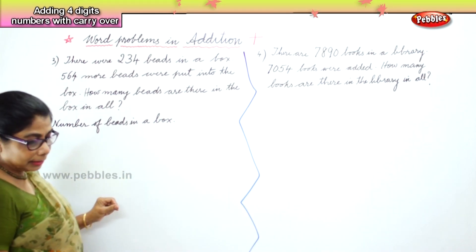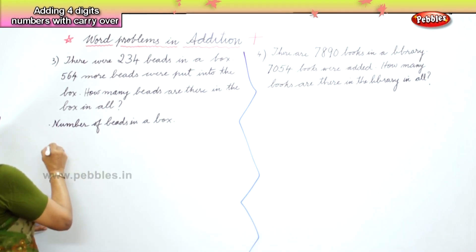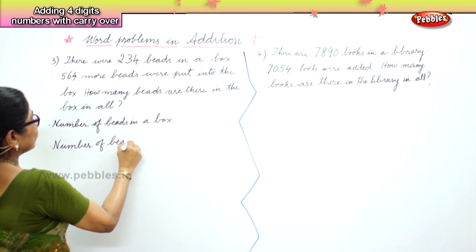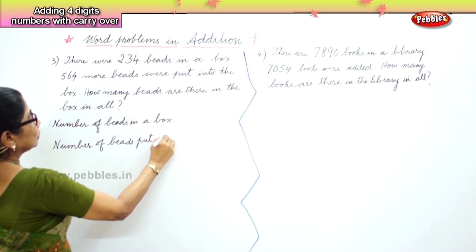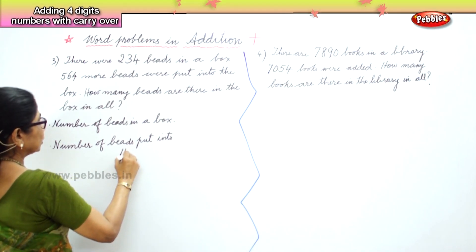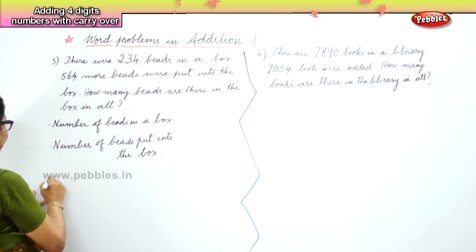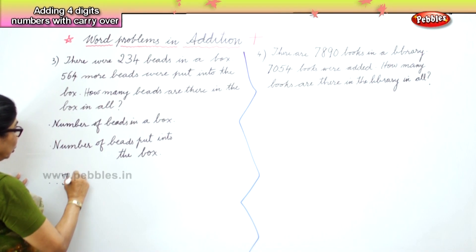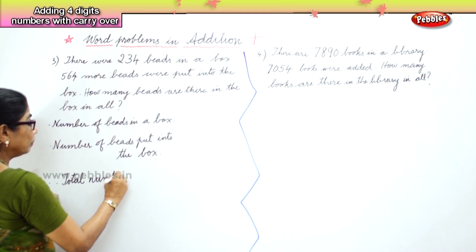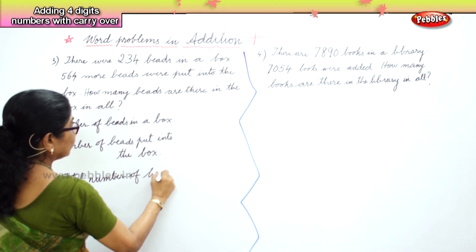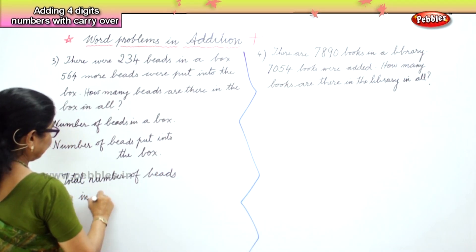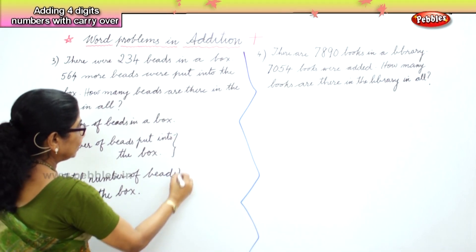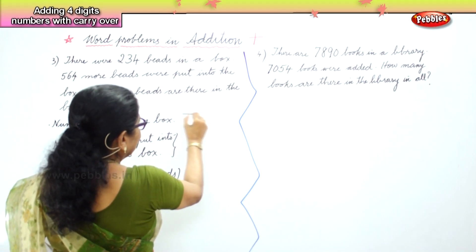The second statement is: number of beads put into the box. And finally, therefore, total number of beads in the box. So you have the three statements ready.